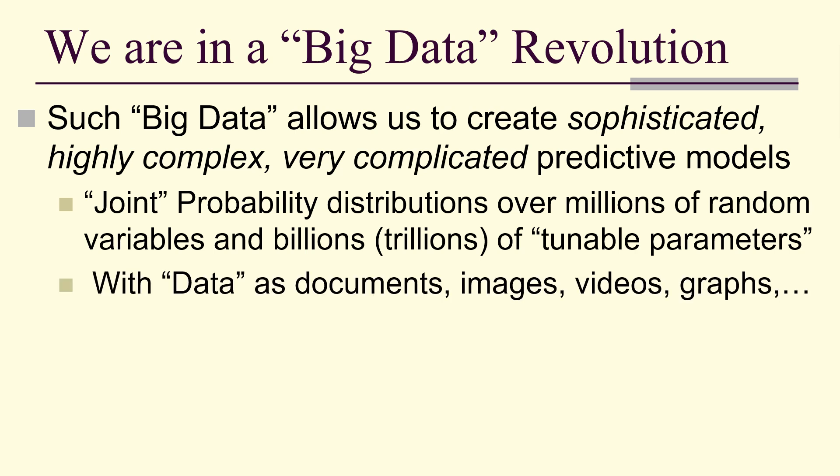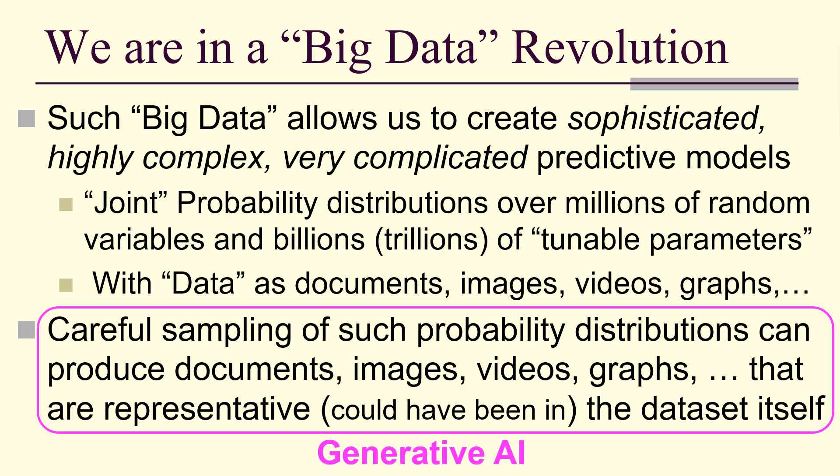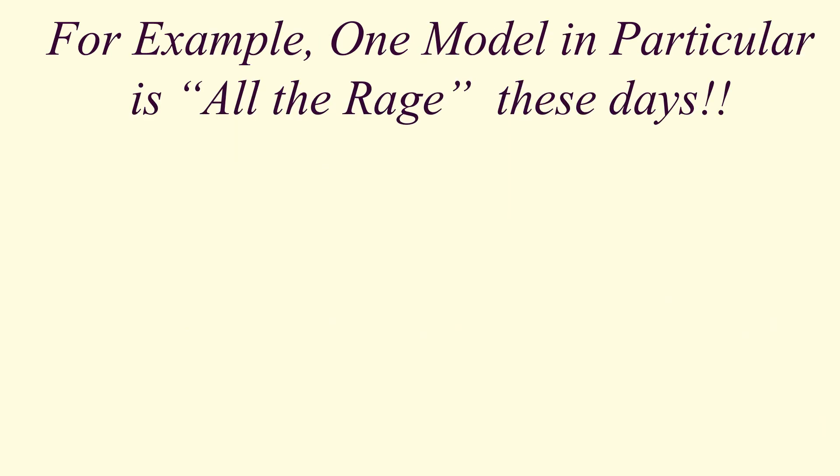With data that can be anything - documents, images, videos, graphs, you name it. Careful sampling of such probability distributions can actually produce documents, images, videos, graphs, and so on that are actually representative. They could have actually been in the data set themselves. This is generative AI.